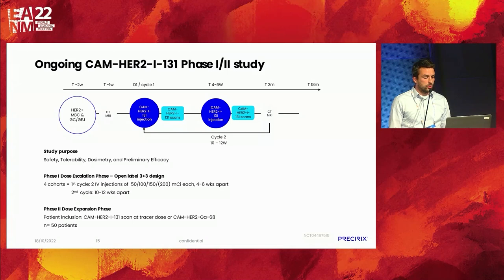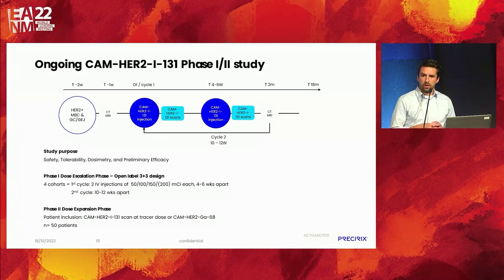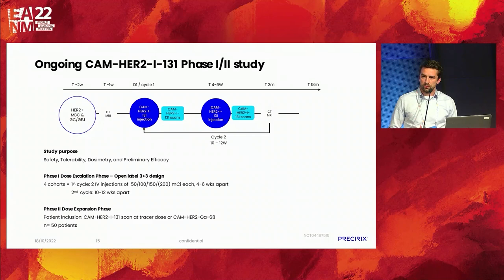All this work has led to an ongoing Phase 1-2 clinical trial looking at safety, tolerability, dosimetry, and preliminary efficacy. The study has a dose escalation part currently ongoing, which will eventually move toward an expansion phase. In that expansion phase we also aim to introduce imaging for patient selection — both the camHER2 iodine biomarker dose and the gallium compound when it is up and running.